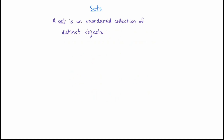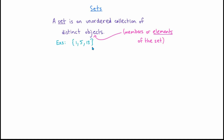First of all, we all probably know that a set is an unordered collection of distinct objects. The objects of the set are called the members, or the elements of the set. To give a few simple examples, here is the set consisting of the numbers 1, 5, and 13. Of course, sets don't have to consist entirely of numbers — they can consist of any kinds of objects that we want to put in there.